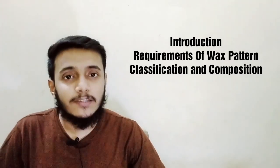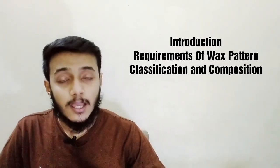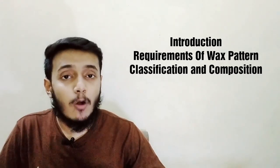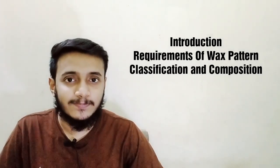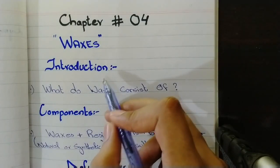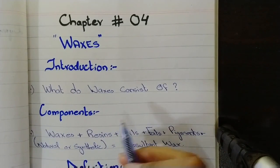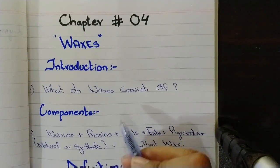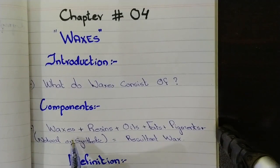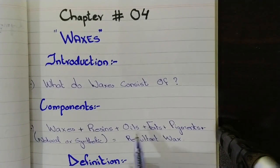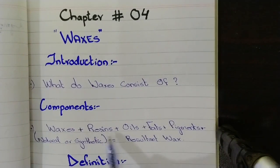We have to and we should know about the properties and every other thing of dental waxes. Today in this video, we will discuss about the introduction and requirements of wax pattern and then the classification and composition of dental waxes. Starting from the introduction, what do waxes consist of? Waxes are composed of five components: waxes that can be natural or synthetic, plus resins, plus oils, plus fats, plus pigments. These all five components are blended together to get a resultant wax.